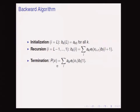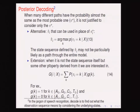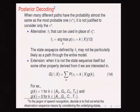When many different paths have almost the same probability as the most probable one, it is not justified to consider only π*. Alternatively, a locally best π̂_i can be used in place of π*_i — useful when interested in the state assignment at a particular position i. Argmax returns such k that maximizes the posterior. The resulting state sequence π̂_i may not be particularly likely as a path through the entire model.